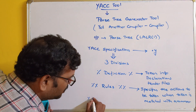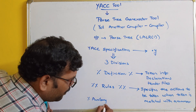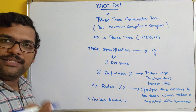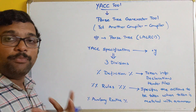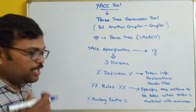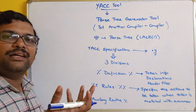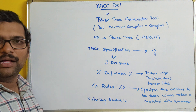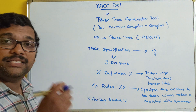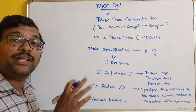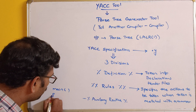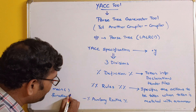The last section is Auxiliary Routines. This section specifies the function definitions — subroutines or functions. Whatever functions we write inside the main function, including the main function itself, will be executed and will return a result as either zero or one. If it returns one, parsing is unsuccessful; if it returns zero, parsing is successful.